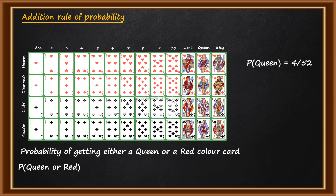For red color cards: 13 cards of Hearts are red and 13 cards of Diamonds are also red, so 26 cards in the pack have red color. The probability of getting a red color card is equal to 26 divided by 52.